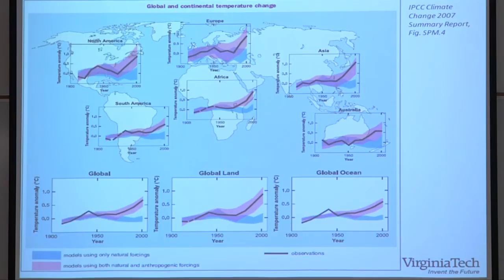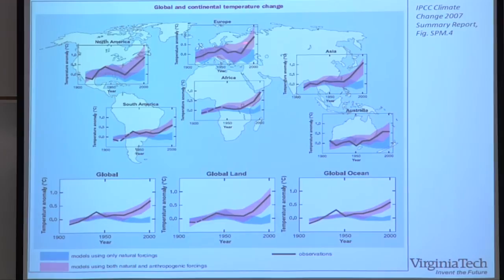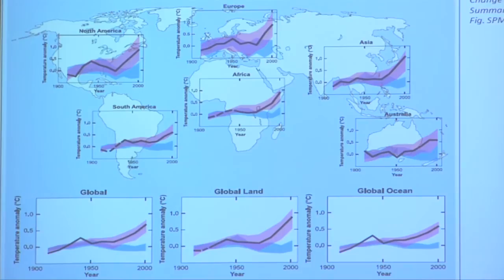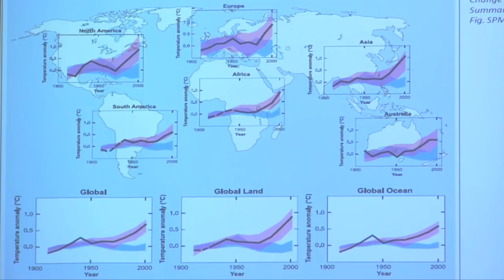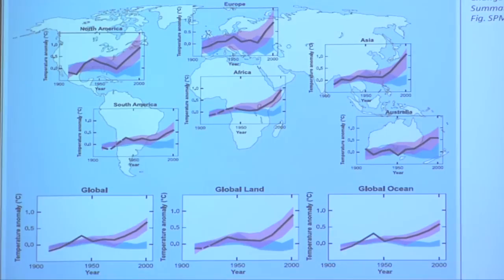There are two sets of models here. The blue models use only natural forcing — no human-induced climate change, no burning of fossil fuels, no cars. The real measured data over the last 100 years is in red. In each case — global land, ocean, different parts of the globe — if you don't add the anthropogenic piece, the trends don't match. When you do add the human-induced piece, the real data always falls within the predicted range. If you leave it out, the model is always too low.